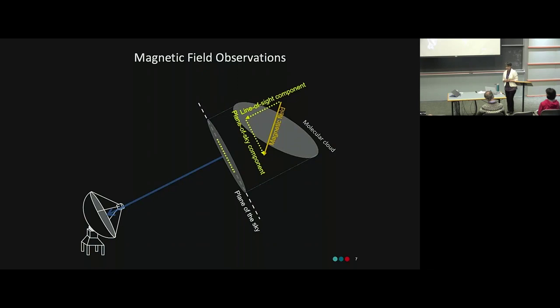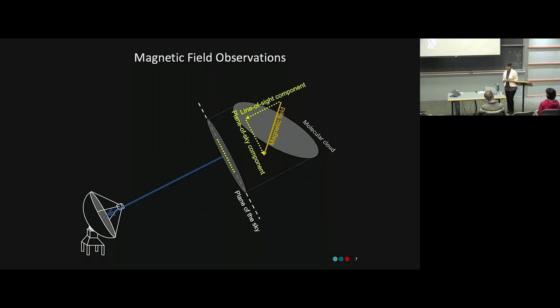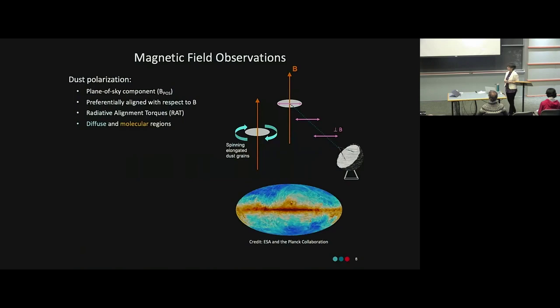Let's look at common techniques for observing magnetic fields. Dust polarization, based on the alignment of elongated interstellar dust grains perpendicular to magnetic fields, provides the plane-of-sky component of the magnetic field. There have been many observations and missions probing this component in different regions, both diffuse and molecular. Zeeman splitting provides the line-of-sight component, probing both diffuse and molecular regions, but requires long telescope integration times and strong magnetic fields, so there are not enough Zeeman measurements available.